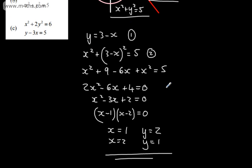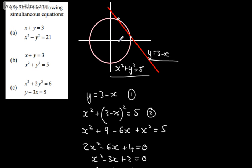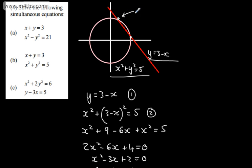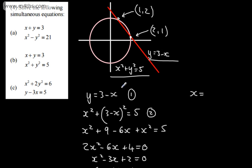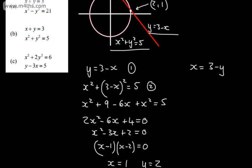We just need to find the y coordinates. When x equals 1, y equals 3 minus 1 equals 2. When x equals 2, y equals 3 minus 2 equals 1. So the intersection points are (1, 2) and (2, 1). Not a massively accurate sketch, but we've got the intersection of a line and a circle. You could also have made x the subject, substituting in 3 minus y to get a quadratic in y, and solved from there.